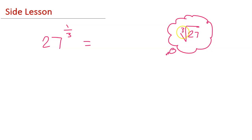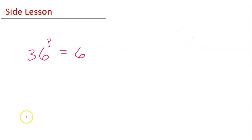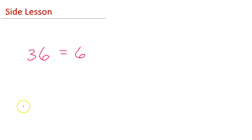You're thinking about the cube root of 27, which is 3. So if I ask you what power will turn 36 into a 6, you should be thinking: I'd have to take the square root of 36 in order to get the 6, so the exponent must be 1 half.